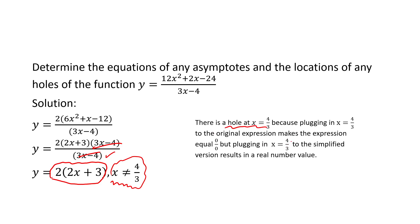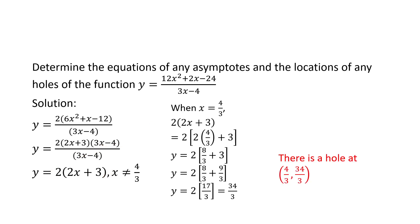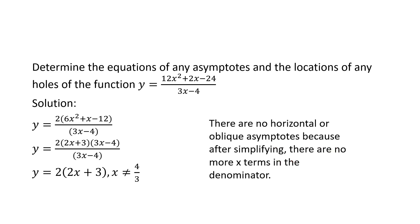We plug the x value of 4 thirds into the simplified expression — not the original expression, which would give something undefined. Plugging into the simplified version gives the y-coordinate of the hole. When we take x equals 4 thirds and plug it into 2 times 2x plus 3, we get 34 thirds. So there's a hole at (4/3, 34/3). There are no horizontal or oblique asymptotes because after simplifying, there were no more x terms in the denominator.